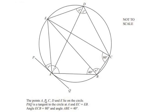The points A, B, C, D and E lie on the circle, and we can see that A, B, C, D and E are on the circle. PAQ is a tangent to the circle at A. A tangent is a straight line which just touches the circle at one point and passes through. So we can see here that PAQ is a tangent and it touches the circle at one point, at A.